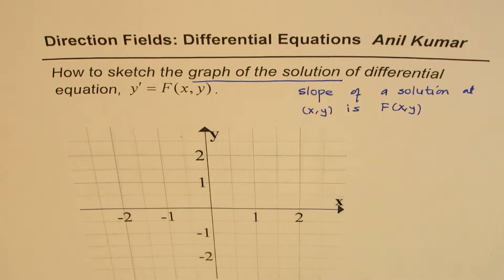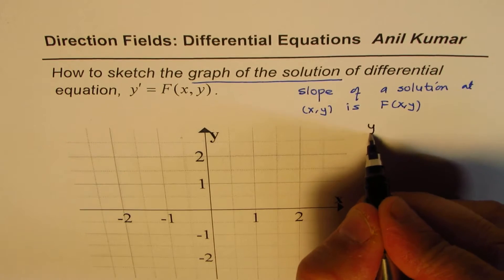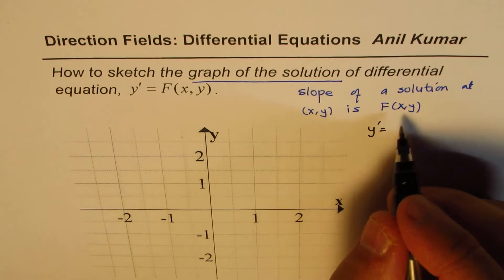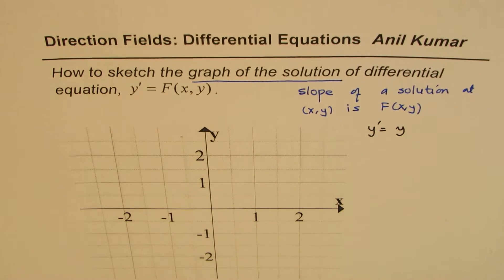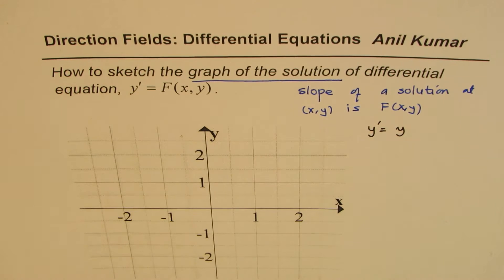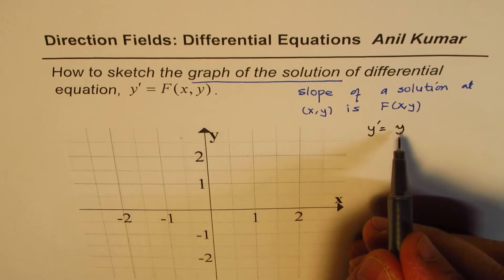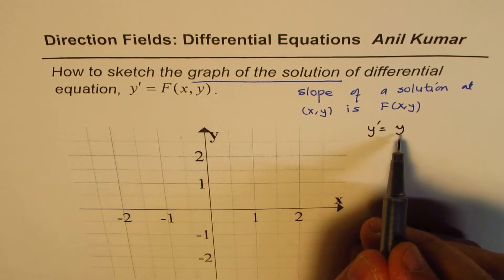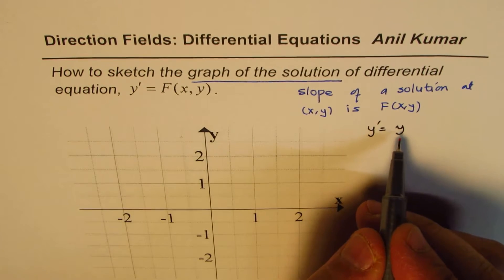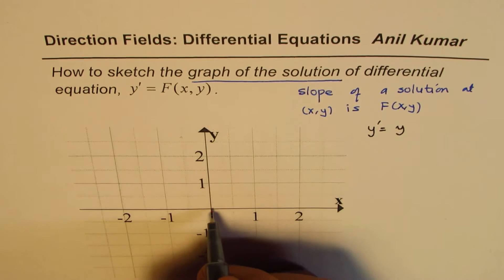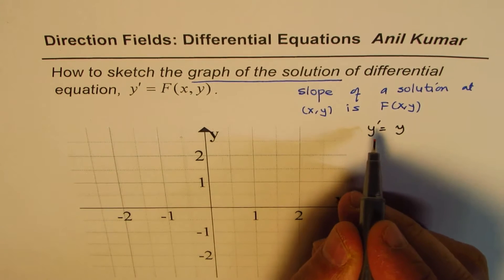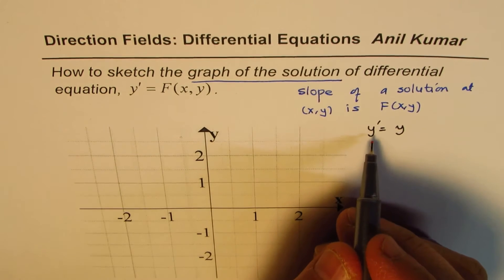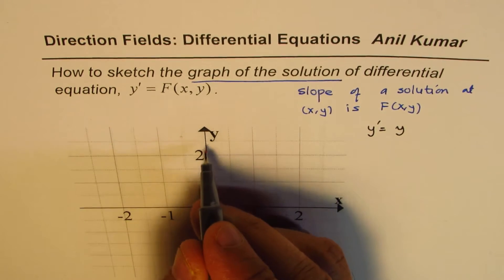To take a simple example, let's consider the equation y' = y. This means that at any point on the coordinate axis, the slope of the solution equals the y-value. We need not know what y is explicitly. What we know is: if y = 0, then y' = 0, so the slope of the graph of the solution is 0 at that point.